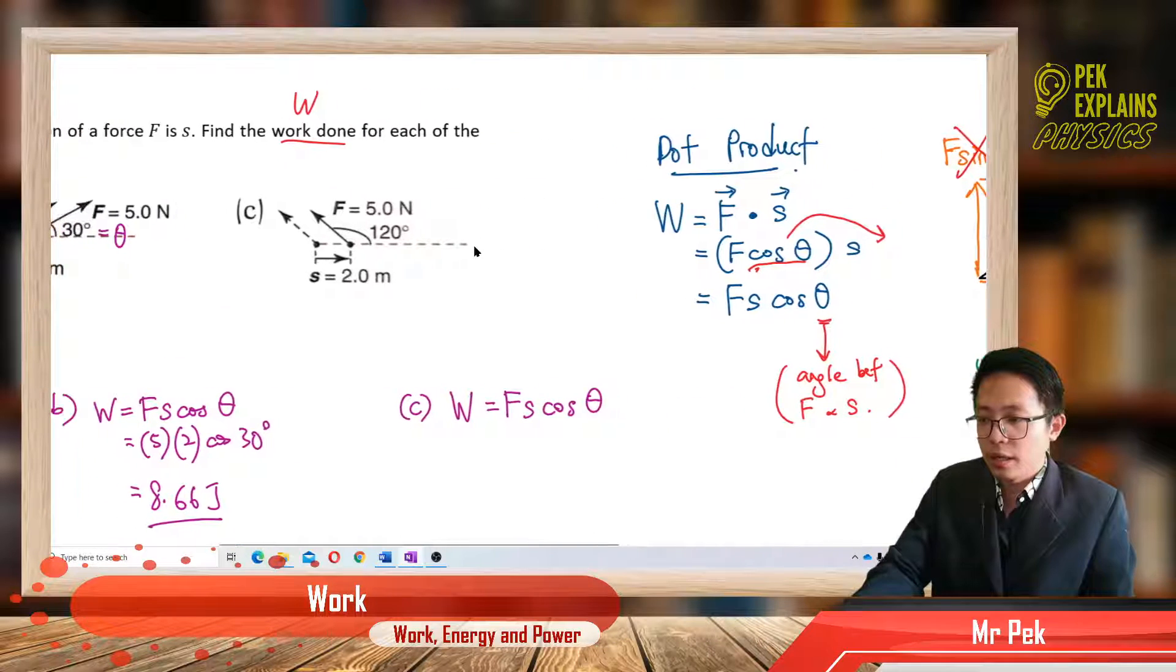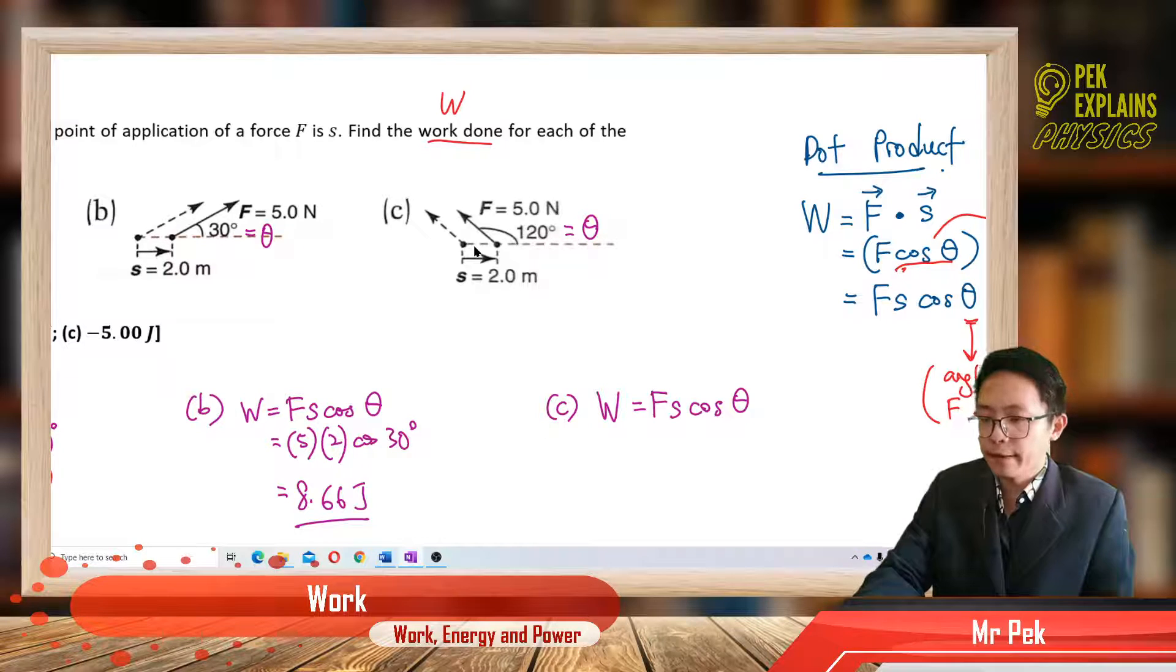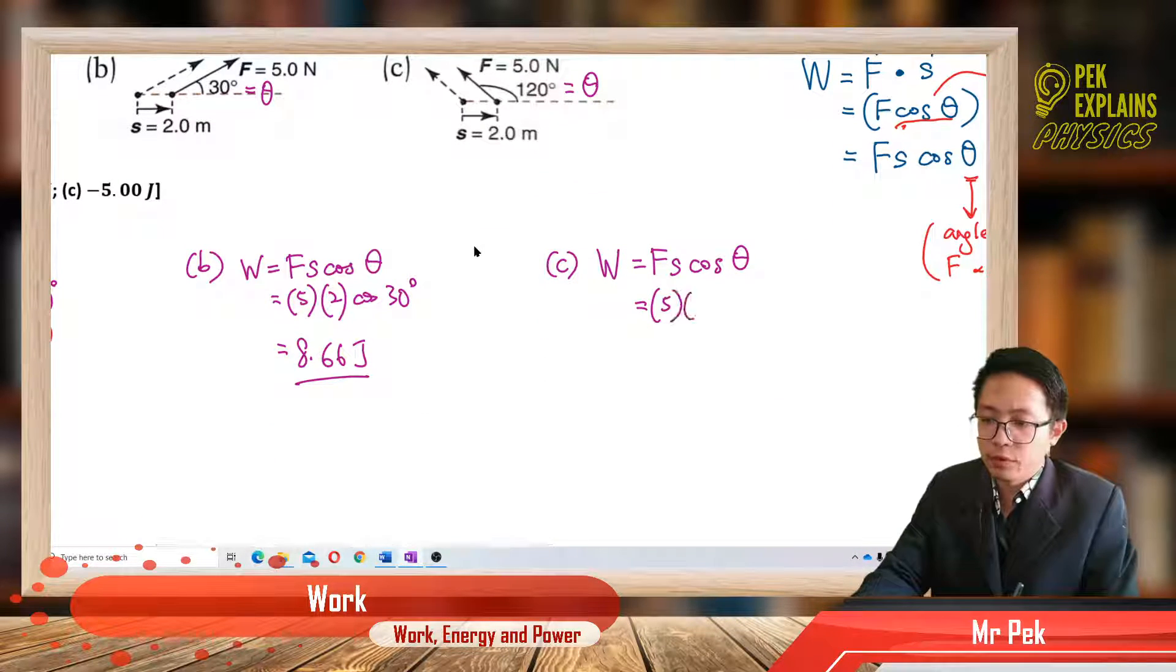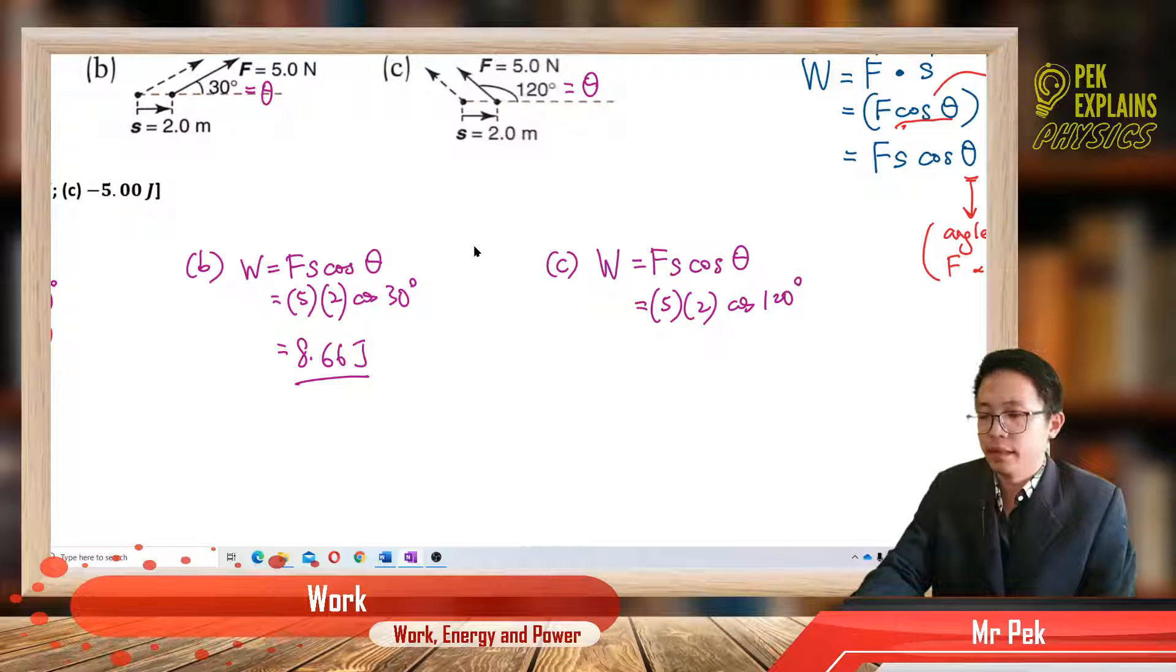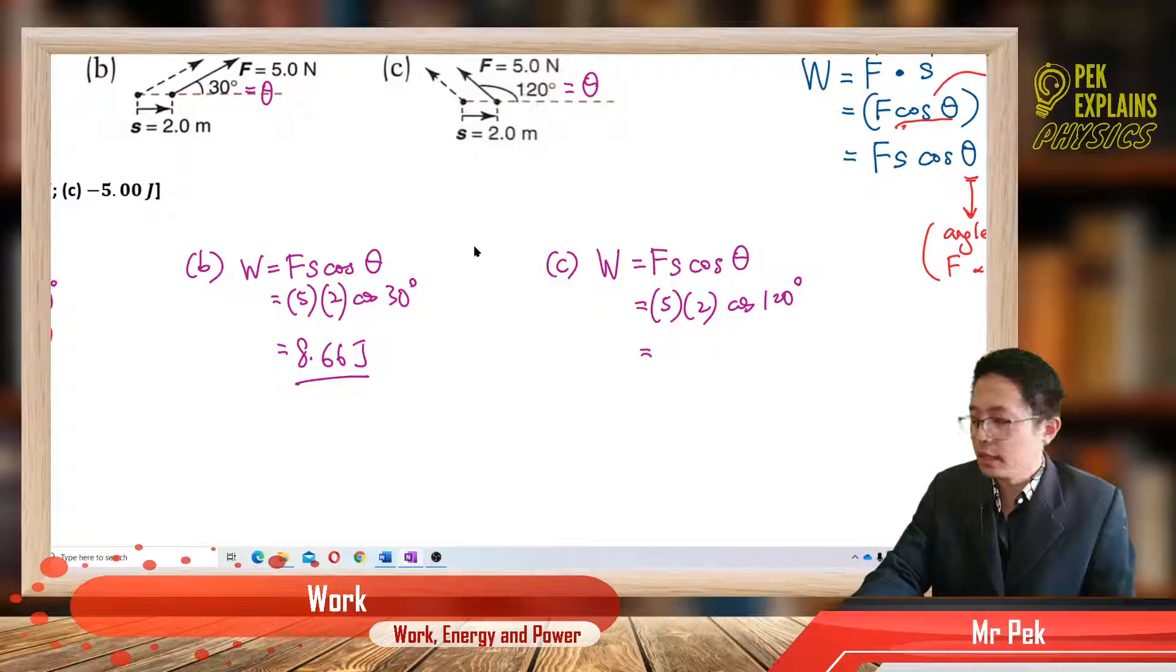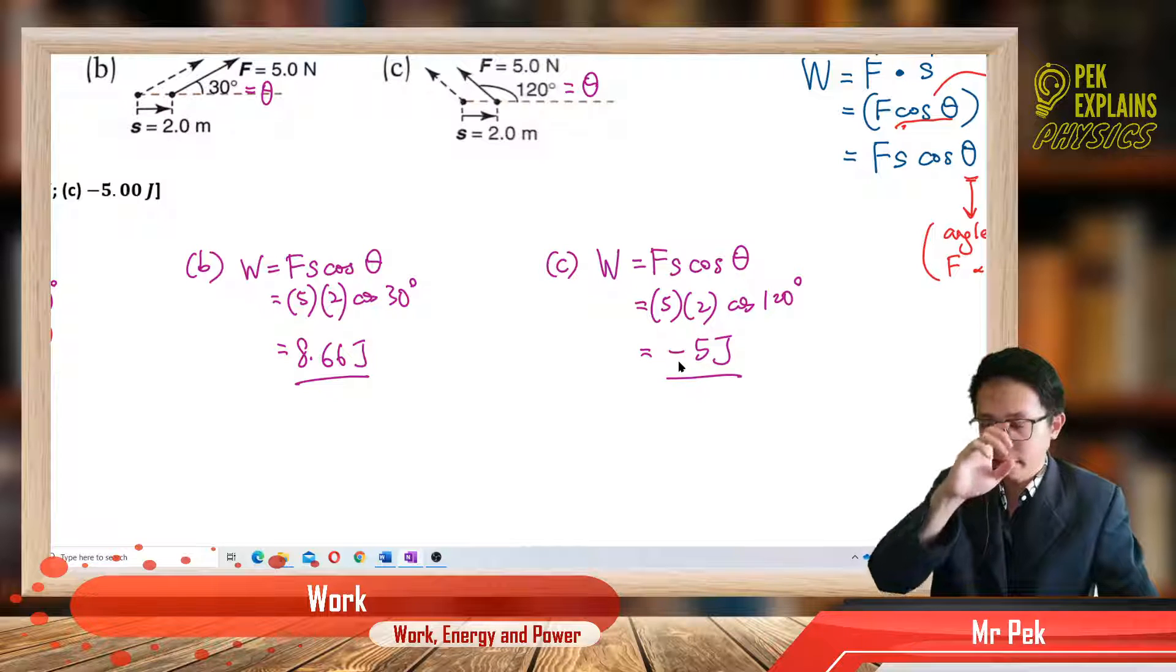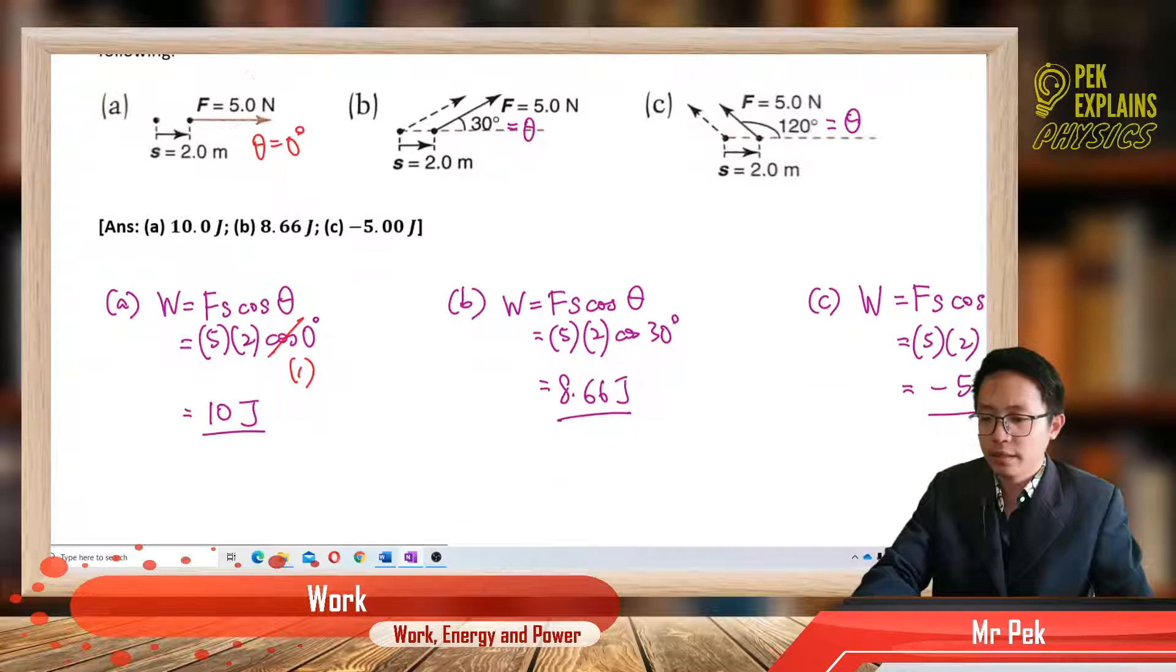Finally, the angle between force and displacement becomes 120 degree. 5 Newton times 2 meter cos 120 degree. Just put the angle between them. We get negative 5 joule. The negative sign, you must write down.